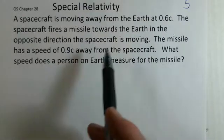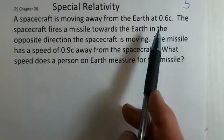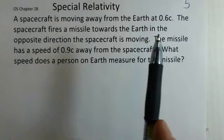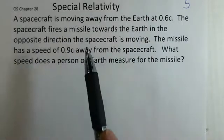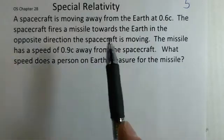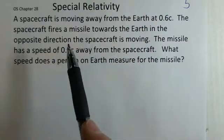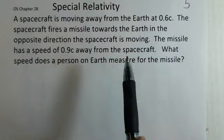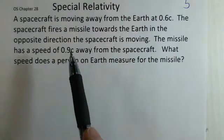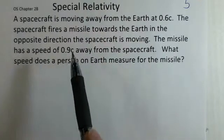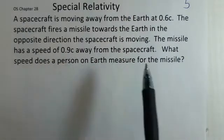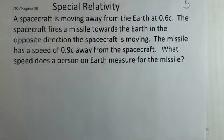This spacecraft, we have one moving away from the Earth at 0.6 times the speed of light, and we'll take that to be a positive. I'll set up a coordinate system in a minute. The spacecraft fires a missile back towards the Earth, so that'll be a negative number, and that's 0.9c with respect to the spacecraft. Now it's a small object, its speed can be built up to a high number as it leaves the spacecraft. What speed does a person on the Earth measure for this missile?